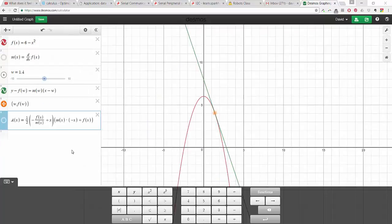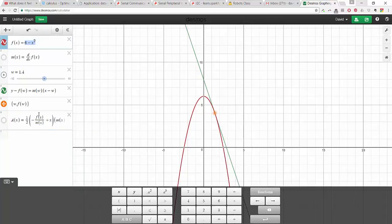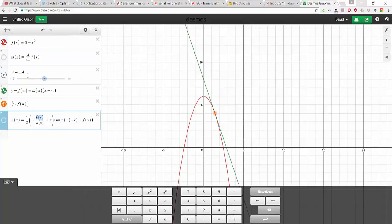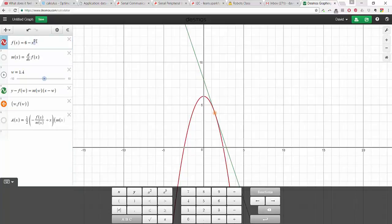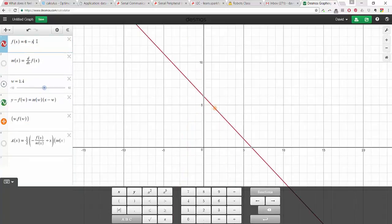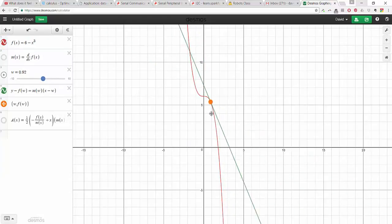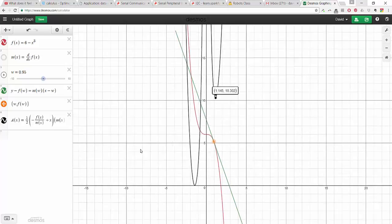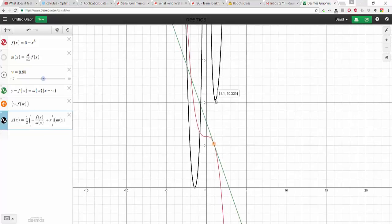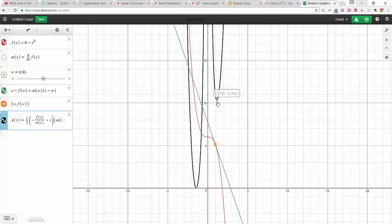So I almost forgot the coolest part. The whole reason we did it this way is so that our area equation wouldn't have anything specifically related to what this particular f function was. Whenever we wanted f, we wrote f. Whenever we wanted the derivative, we wrote m. So this is fully general, and what that means is if I wanted to replace f with something else, like let's make it 6 minus x cubed, so now we've got different function. You can still think about triangles. I wonder what the area looks like. There it is. And you see, we've got the minimum just right away. So we didn't have to solve another problem because we solved the problem in general.